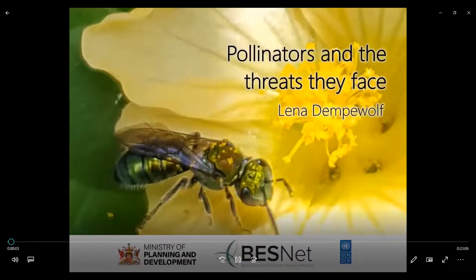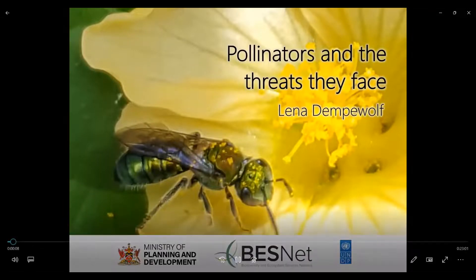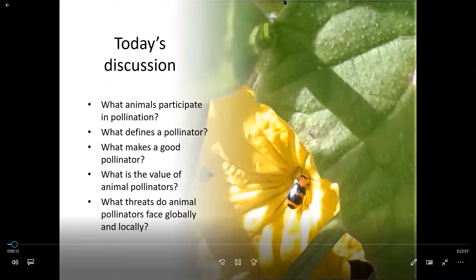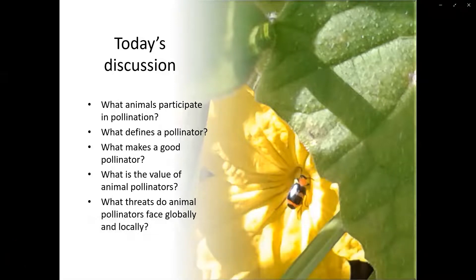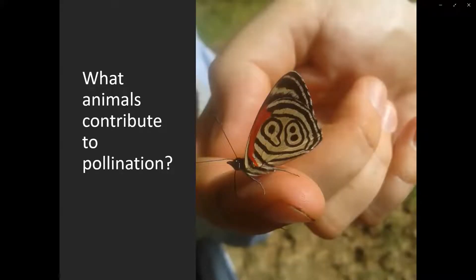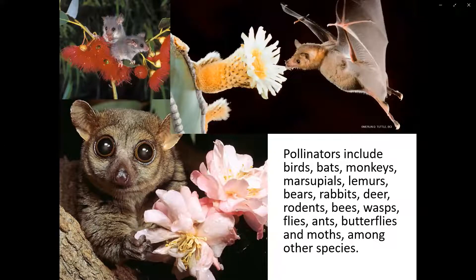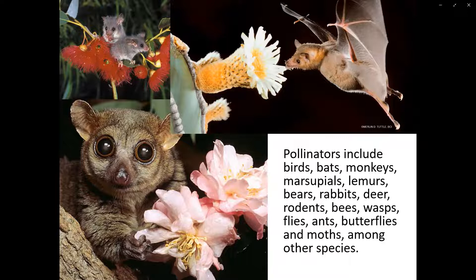Hi everybody. Thank you for joining us today. My name is Lena Dempervulf, and I'll be talking about pollinators and the threats that they face. For today's discussion, we're going to talk about what animals participate in pollination, what actually defines a pollinator and what makes a good one, what is the value of animal pollinators, and what threats do animal pollinators face globally and locally? To jump right into it: what animals actually contribute to pollination? Pollinators include birds, bats, monkeys, marsupials, lemurs, bears, rabbits, deer, rodents, bees, wasps, flies, ants, butterflies, and moths, and many other species.